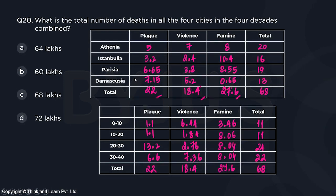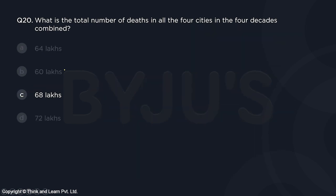Question 20: What is the total number of deaths in all four cities across all four decades combined? We calculated the grand total as 68 lakh across all cities, all decades, and all causes. The answer is option C.